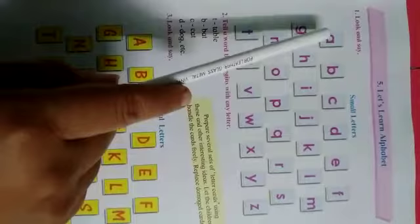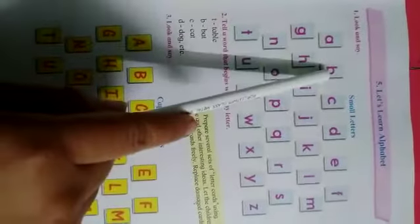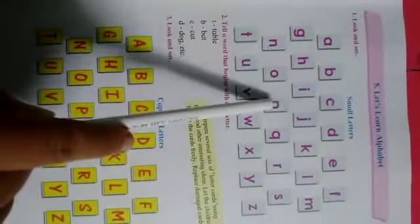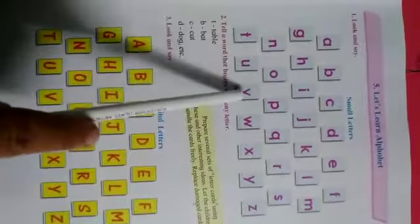So children, here you can see there are some alphabets in small letters. Let's read them out: A, B, C, D, E, F, G, H, I, J, K, L, M, N, O, P, Q, R, S, T, U, V, W, X, Y, Z.